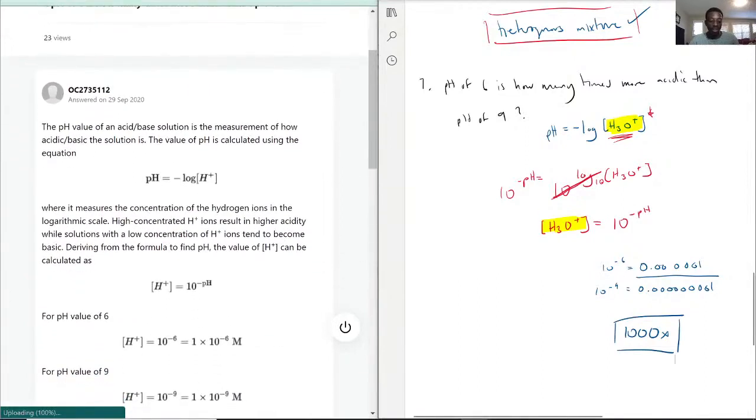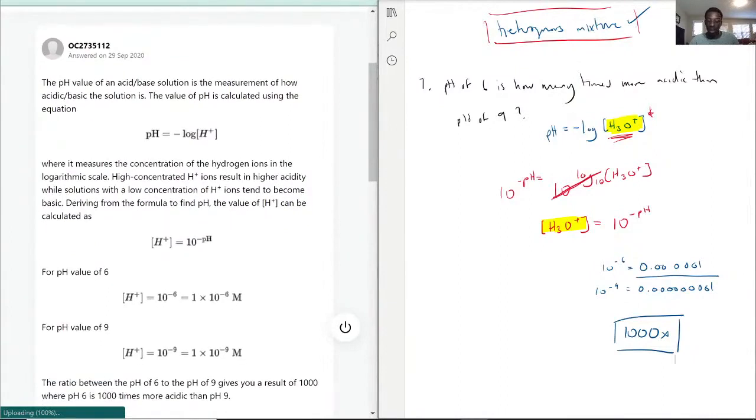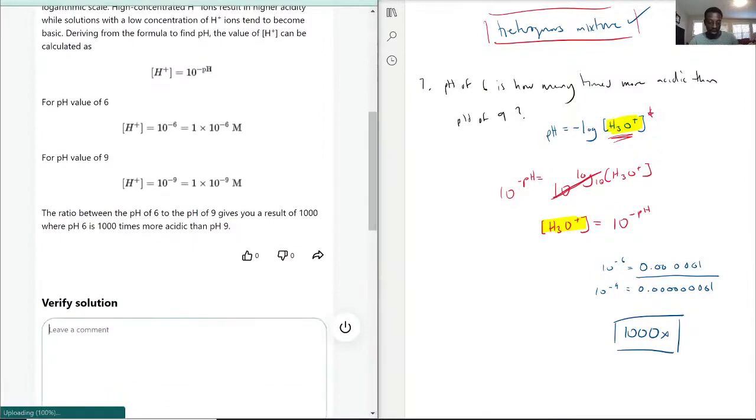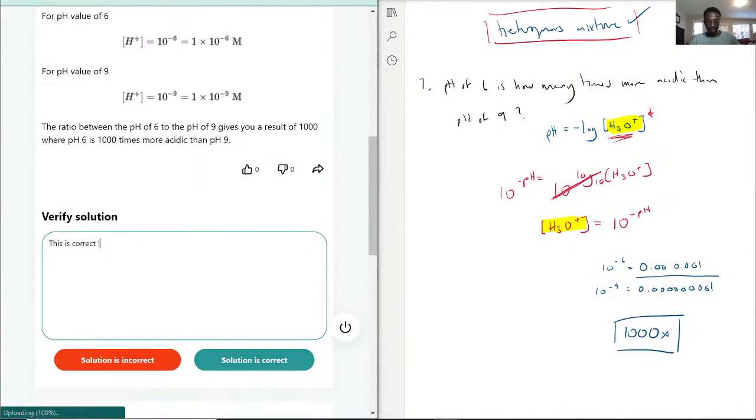And you can see here exactly, they flipped the formula over, which is what we got, and then they got these two values. When you divide them together, that's the ratio you get, so this is correct. Now we're going to go on to question 8.